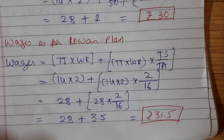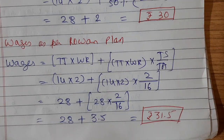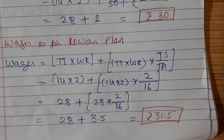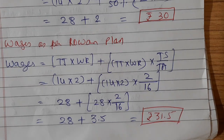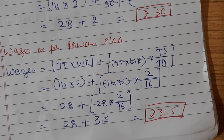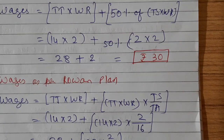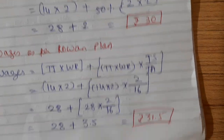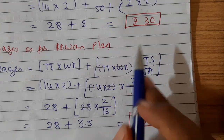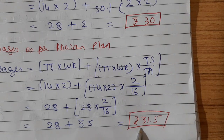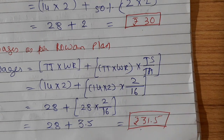See the difference: rupees 30 under Halsey plan and rupees 31.5 under Rowan plan. If the worker is paid wages as per Rowan plan, he will be getting rupees 31.5.